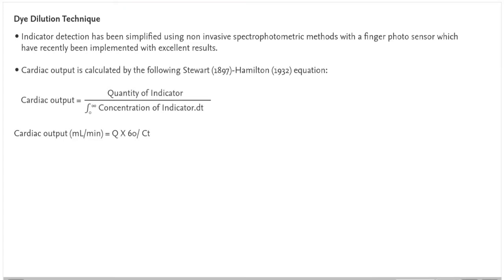Cardiac output is calculated by the following Stewart 1897 Hamilton 1932 equation. Cardiac output in milliliters per minute equals Q times 60 divided by CT.